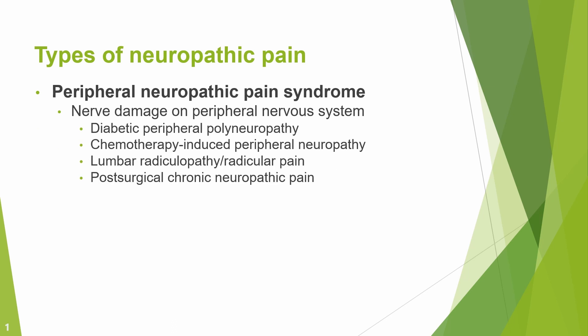Patients with peripheral neuropathic pain syndrome have nerve damage in the peripheral nervous system. Examples include diabetic peripheral polyneuropathy in patients with diabetes, chemotherapy-induced peripheral neuropathy from certain chemotherapy agents, and post-surgical chronic neuropathic pain from nerve damage due to surgery.